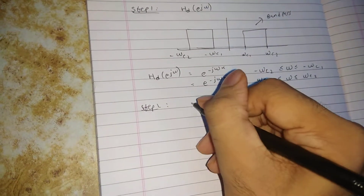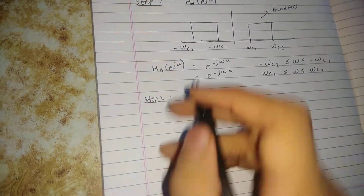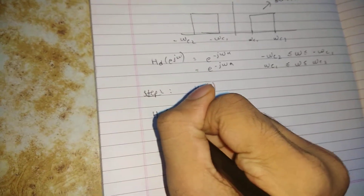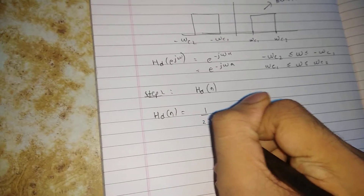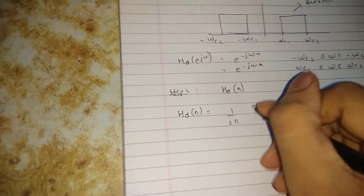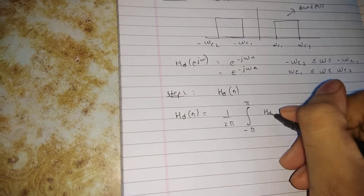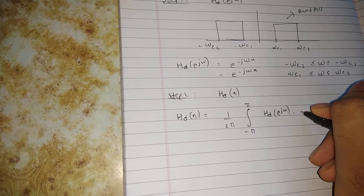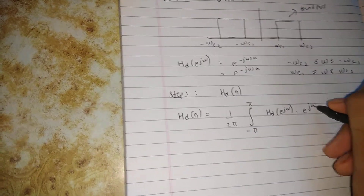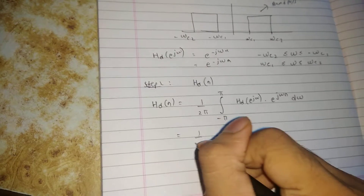Step number two is to calculate hd(n). The formula for hd(n) is: hd(n) = (1/2π) × integral from −π to π of HD(e^jω) × e^(jωn) dω. After writing this formula, substitute (1/2π) and open a bracket because we have two ranges.